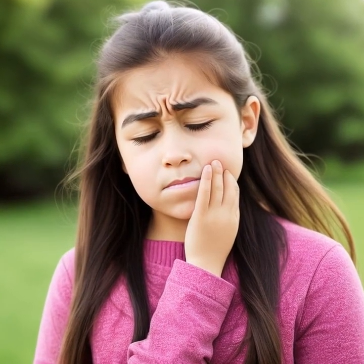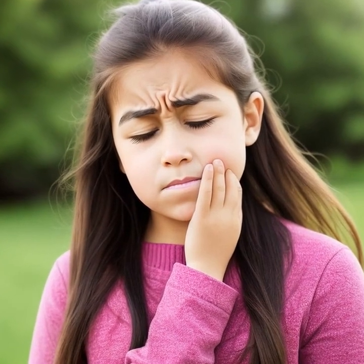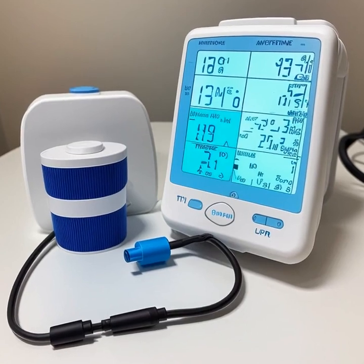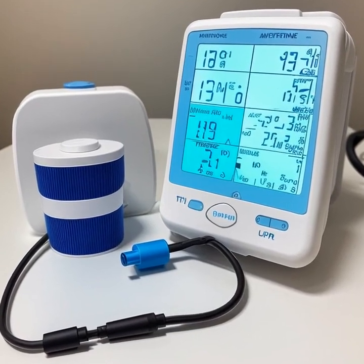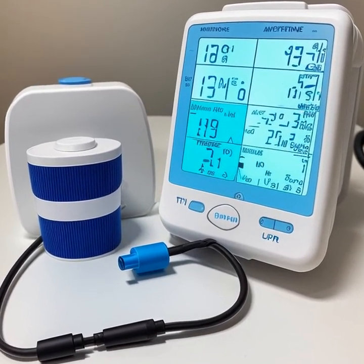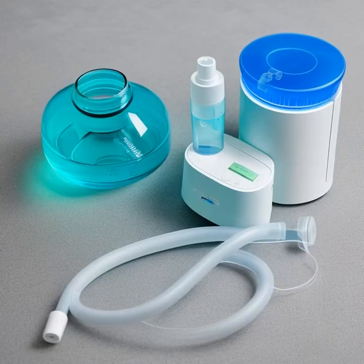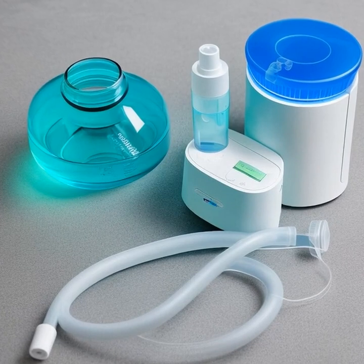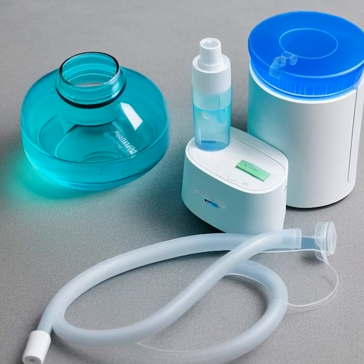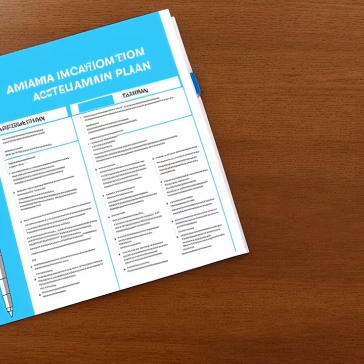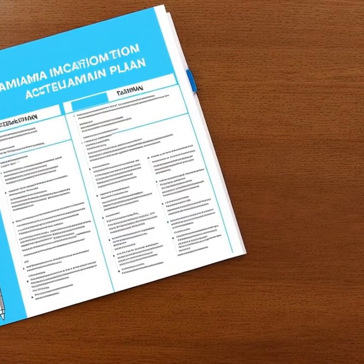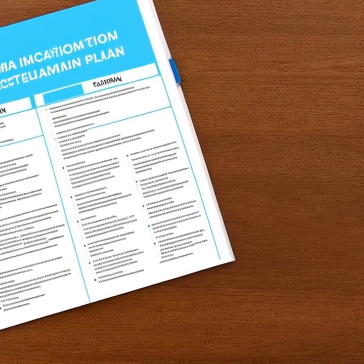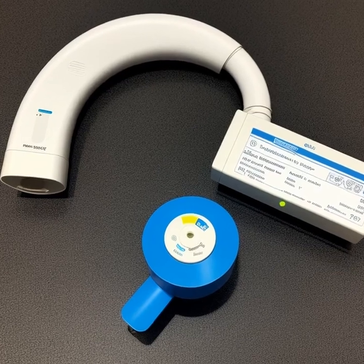Now let's talk about airway hyperresponsiveness. This means that the airways of people with asthma are more sensitive and reactive than those without the condition. When exposed to certain triggers, the muscles surrounding the airways can contract more than usual, causing the airways to narrow even further. This exaggerated response is referred to as bronchoconstriction.